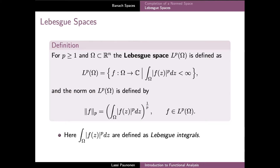We already saw earlier that the spaces of continuous functions are not complete with respect to the P-norms, which are defined using integrals. The completions of these spaces are also understood very well, and they are precisely the so-called Lebesgue spaces, which are denoted by LP. The Lebesgue spaces and their properties are studied in greater detail in the course on measure and integration theory. Here we note that the space LP consists of those measurable functions F for which the Lebesgue integral of the P-th power of the modulus of F is finite.